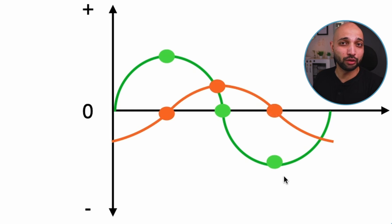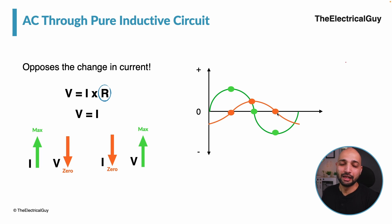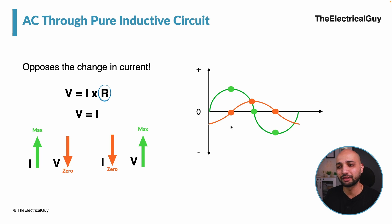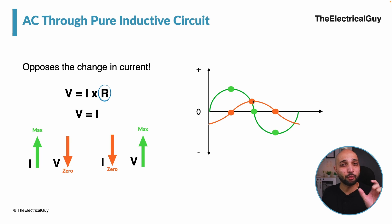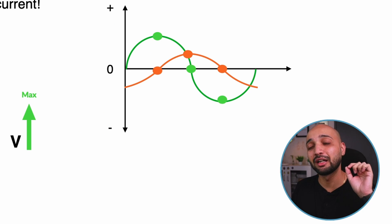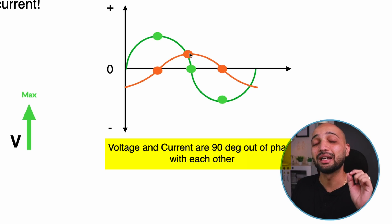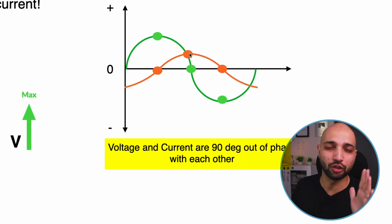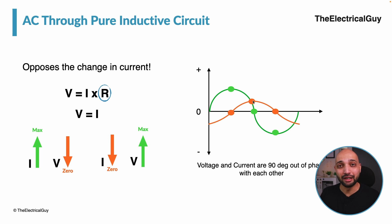Similarly, when current drops to its negative peak, the inductor drops the voltage to zero. That is the reason why there is a difference between when current reaches its peak value and when voltage reaches its peak value. If current reaches its maximum value at 90 degrees, then voltage reaches its maximum value at 180 degrees — so there is a gap of 90 degrees. Hence, in an inductive circuit, voltage and current are said to be 90 degrees out of phase with each other.